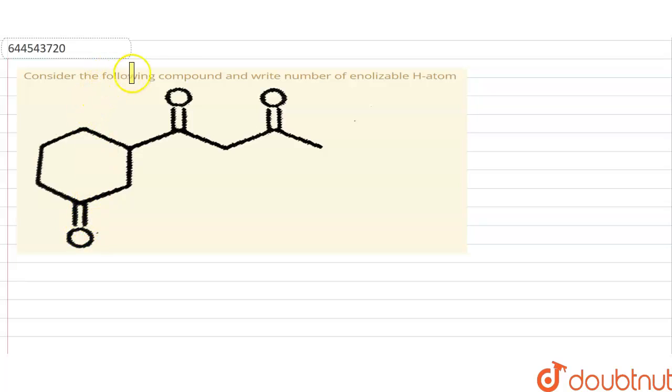The question says consider the following compound and write the number of enolizable H atom. Here we have to count the enolizable H atom from this following compound.